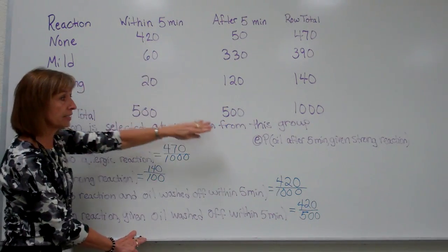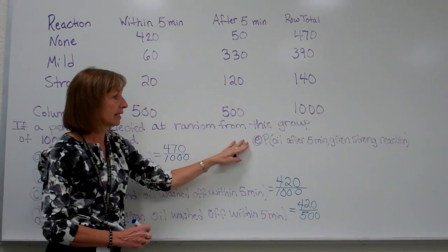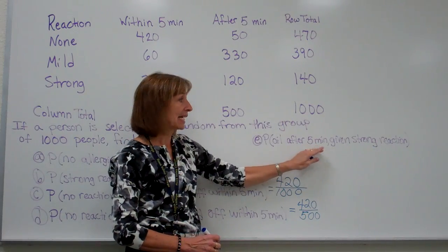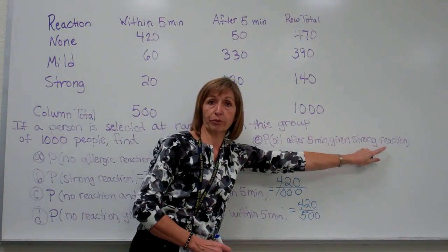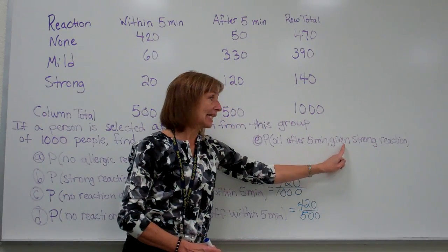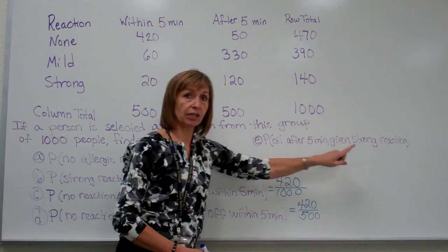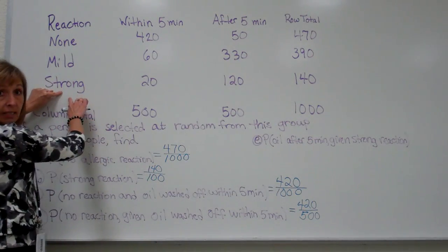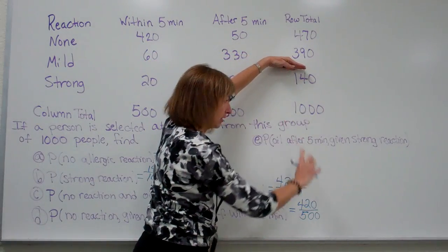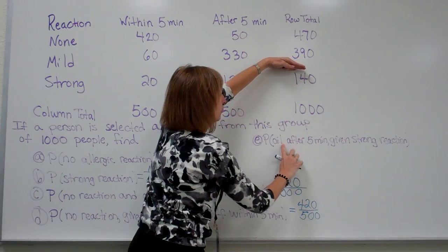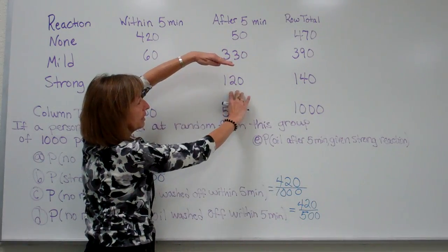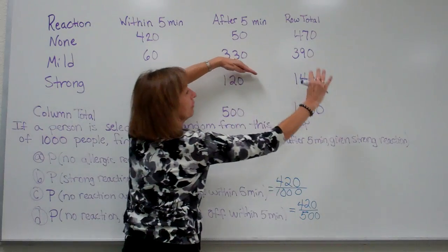Now I have one more conditional probability example to do for this segment. Here, it's the probability that the oil is washed off after 5 minutes, given that it's a strong reaction. So remember, we look at what's after the word given. Given that it's a strong reaction, I find where it says strong reaction, that's here. So I'm only going to look in this row, because that's the part that's after the word given. So oil washed off after 5 minutes, just in that row, is 120 out of the 140.